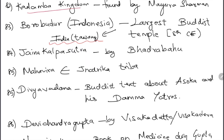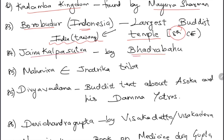Kadamba Kingdom was founded by Mayurasharman. Borobudur is in Indonesia — it is the largest Buddhist temple in the world, built in the 8th century. Jain Kalpa Sutra was written by Bhadrabahu.